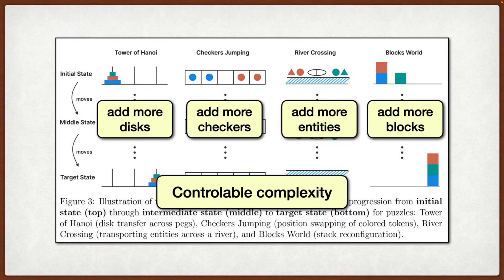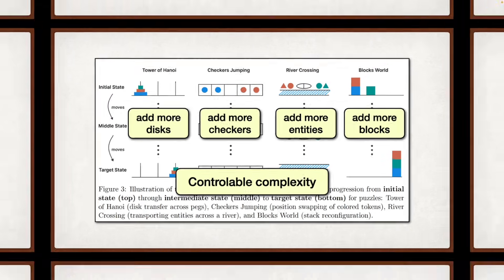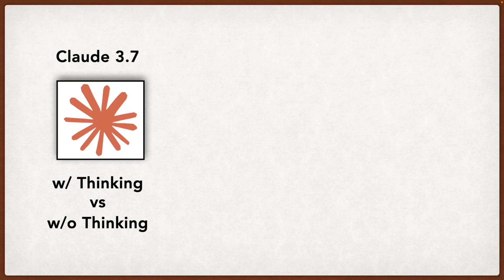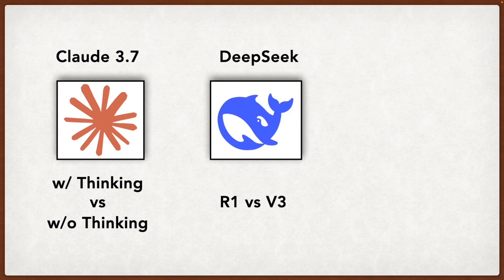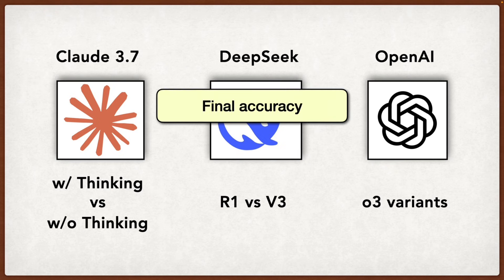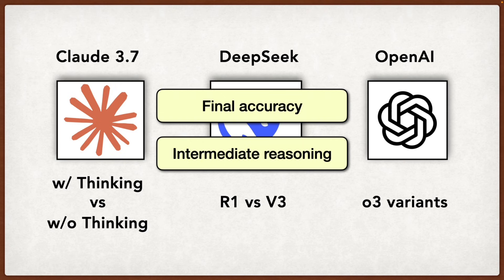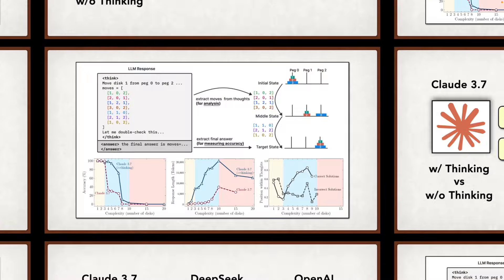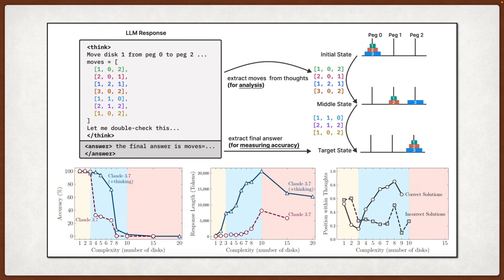Now the authors compared reasoning models with their non-thinking counterparts under equivalent inference compute budgets. They test models like Claude 3.7 Sonnet, with and without thinking, DeepSeek R1 vs. V3, and various O3 mini-configurations. And for each puzzle instance, they generate multiple samples and analyze both final accuracy and the intermediate reasoning traces to understand what's happening during the thinking process.